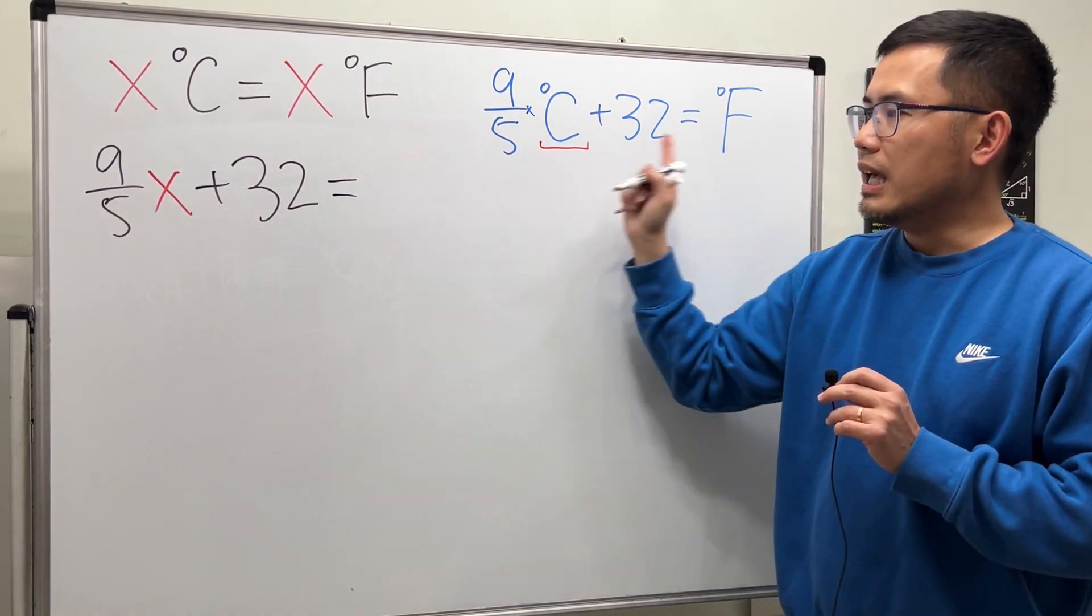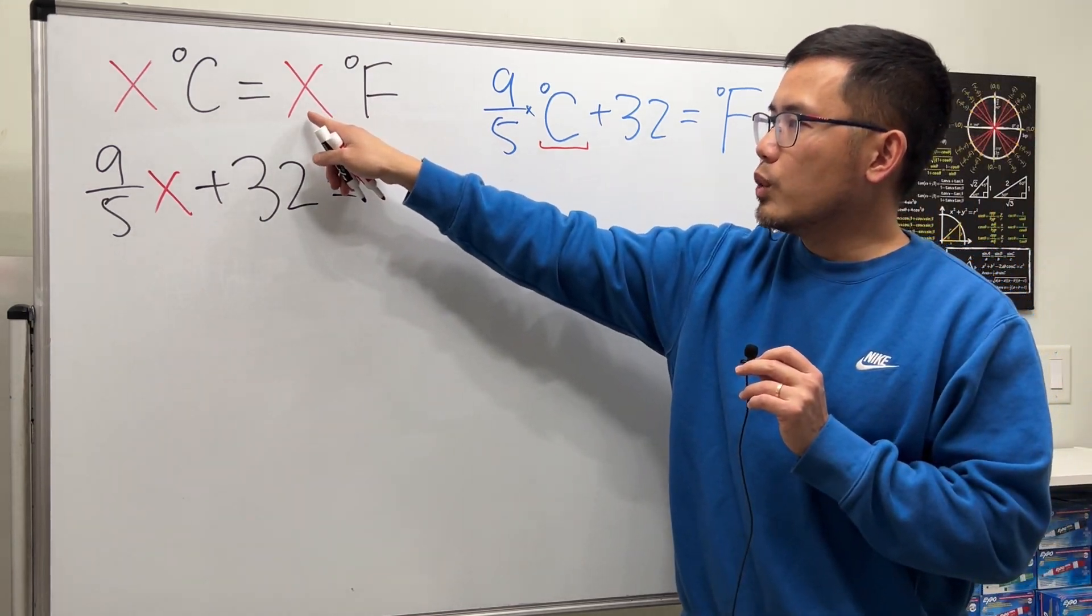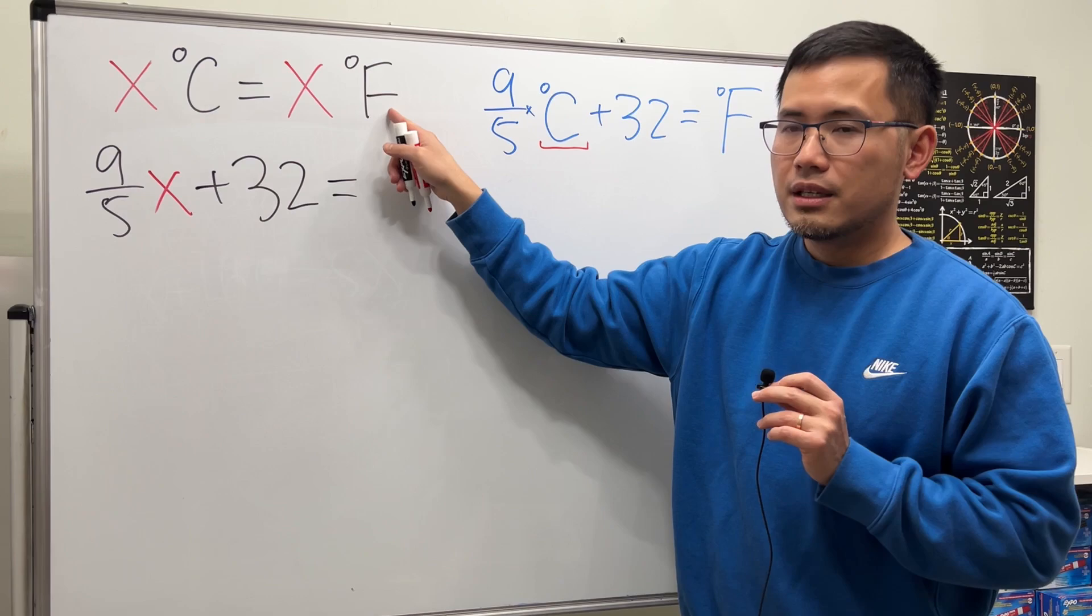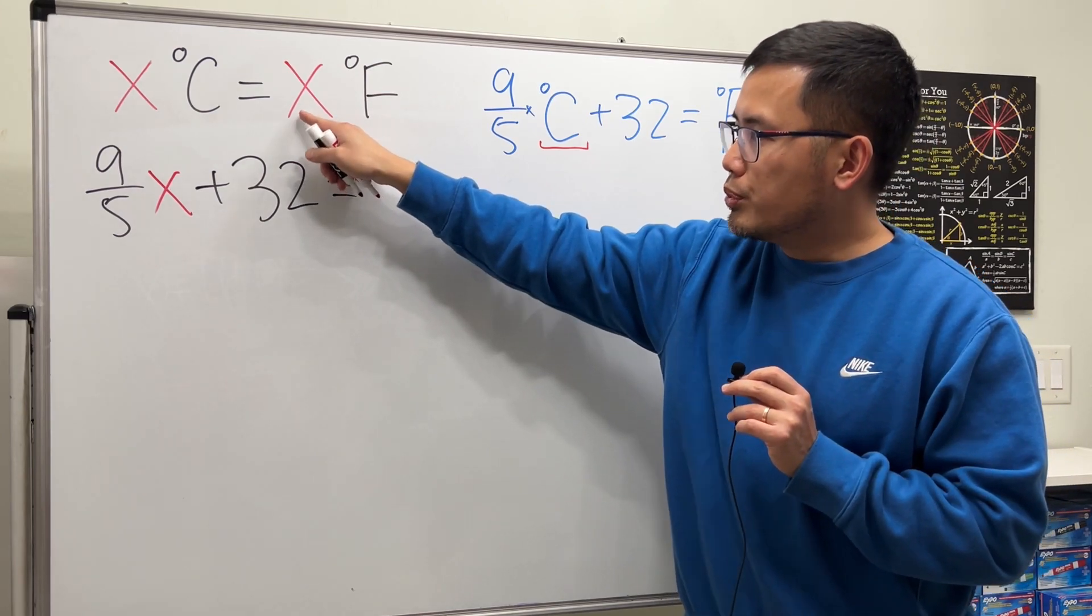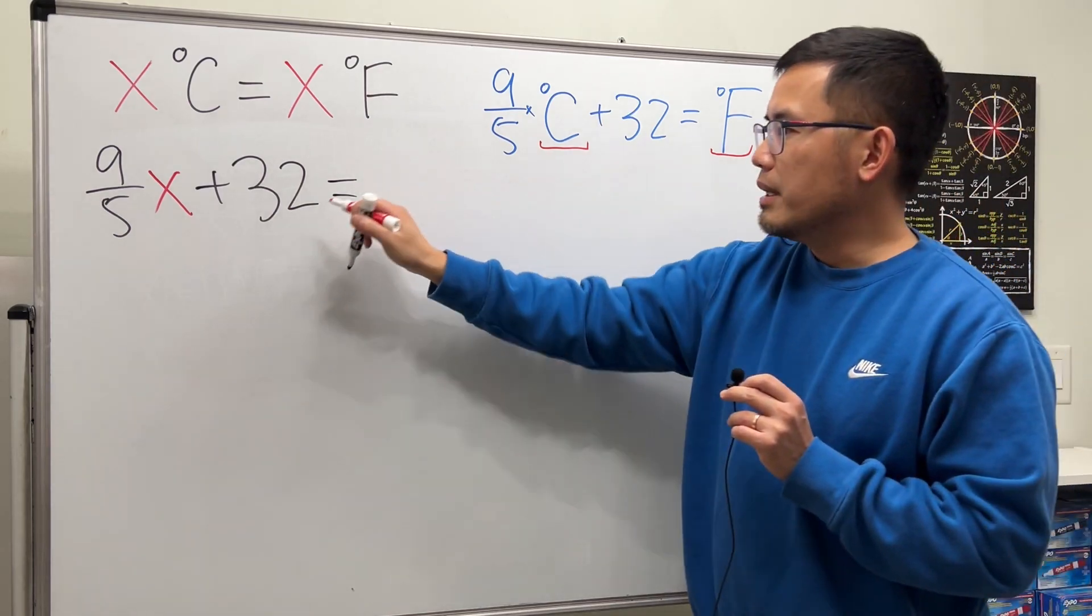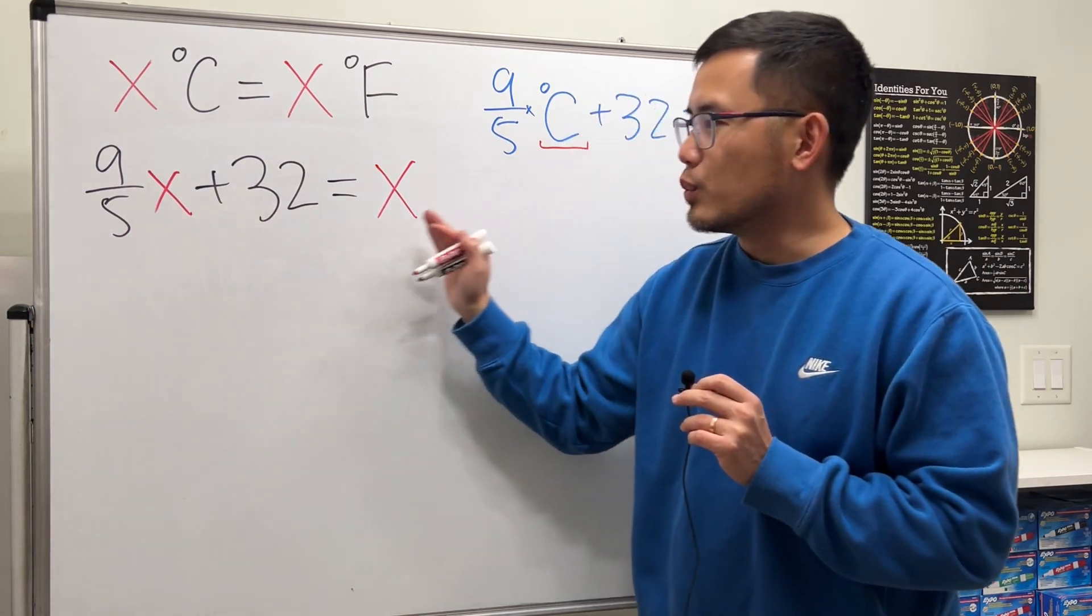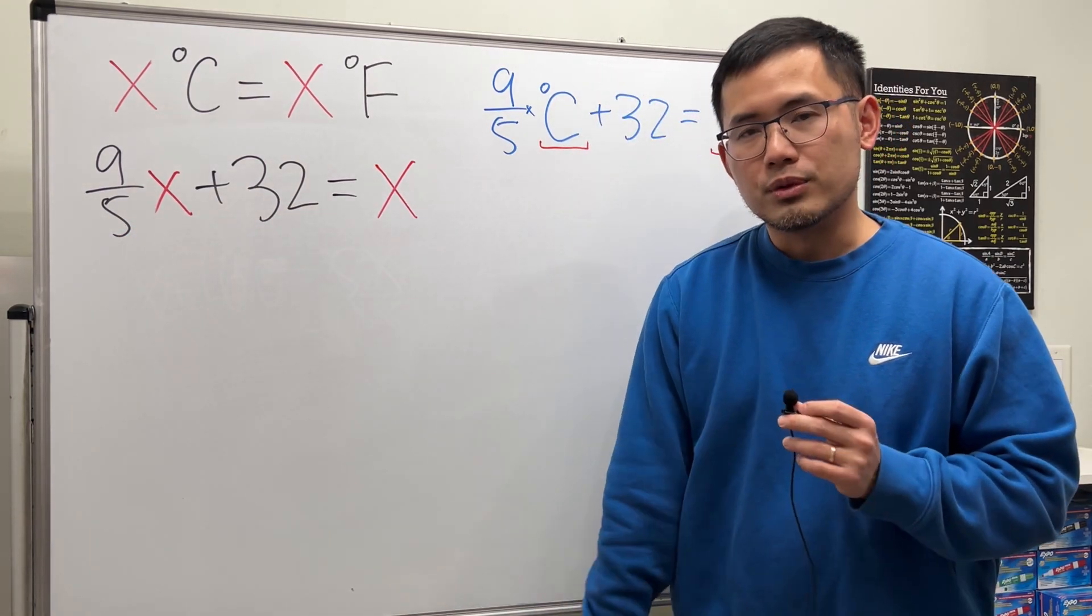Do not just put down F. That's the mistake from the post. Right here, because we also want to have x degree Fahrenheit. So make sure we also put the x right here for the Fahrenheit. So we make this equal to x, like that. Now you see we have an equation with just x. We will be able to solve for x.